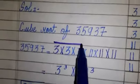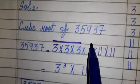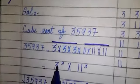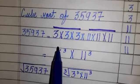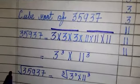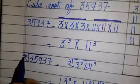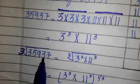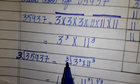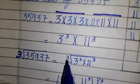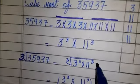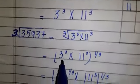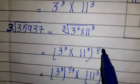This is equal to 3 to the power 3 into 11 to the power 3. Now we take the cube root on both sides: the cube root of 35937 equals the cube root of 3 to the power 3 into 11 to the power 3.